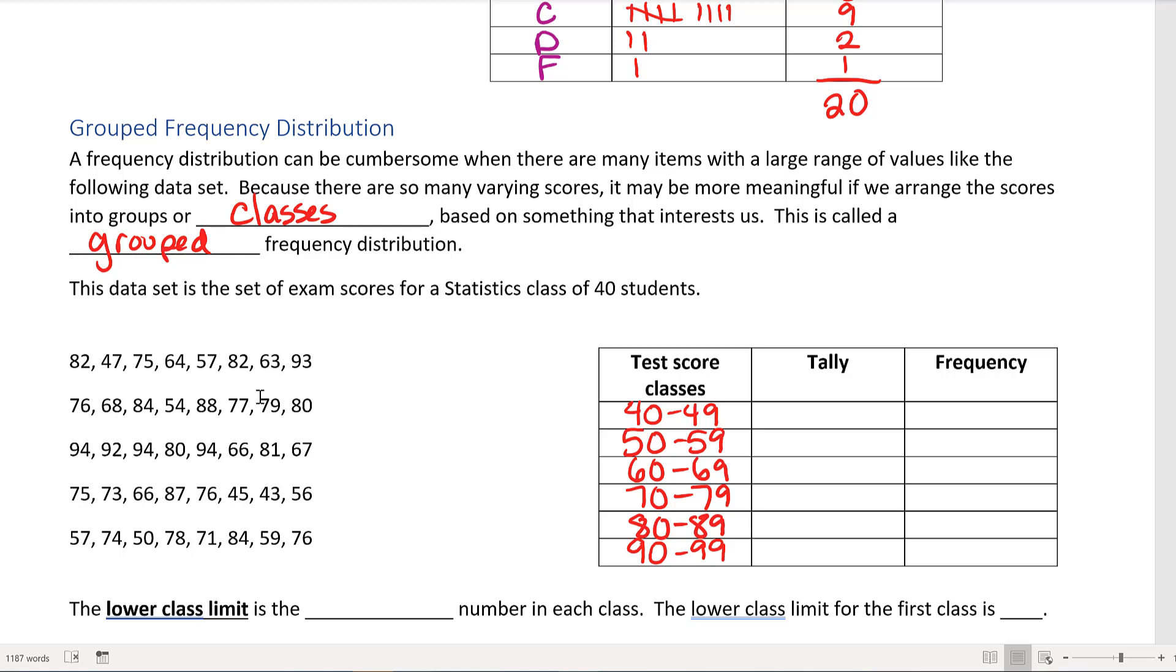Now I can go back and do my tallying. For 82, I'm going to make one tally mark in the group between 80 and 89. For 47, I make a tally mark between 40 and 49. For 75, I put a mark between 70 and 79.